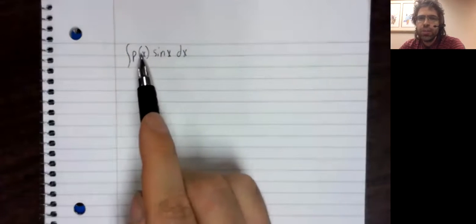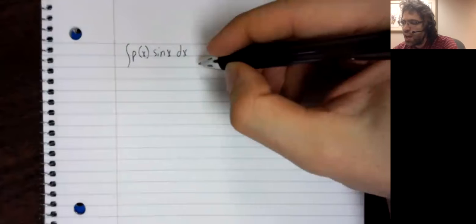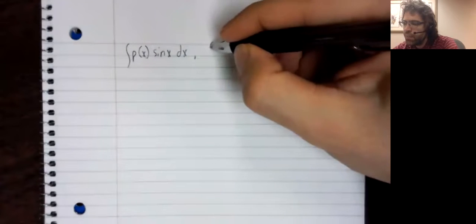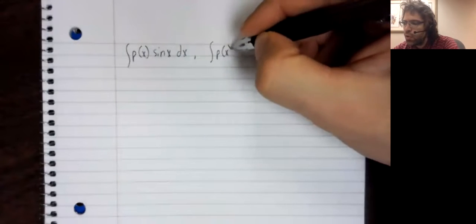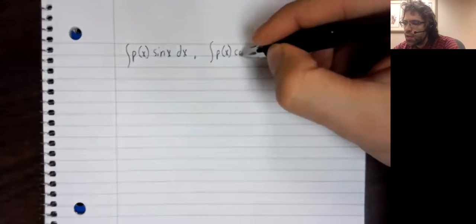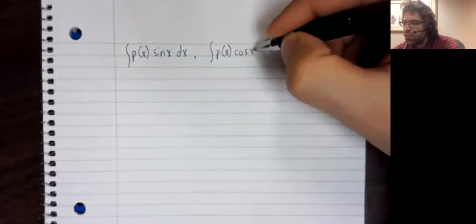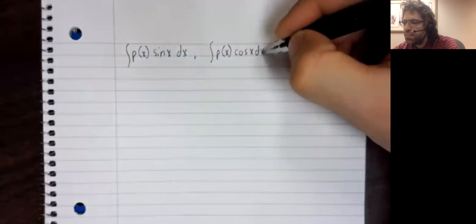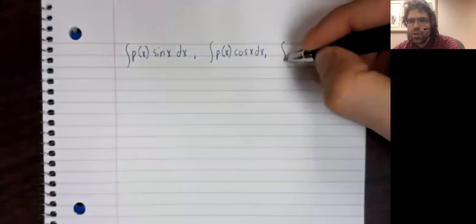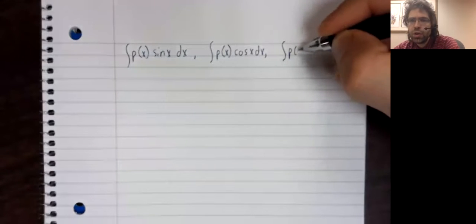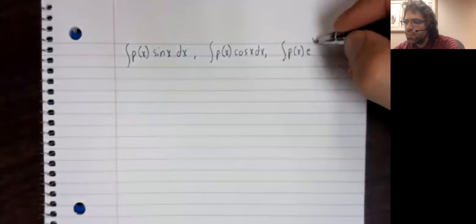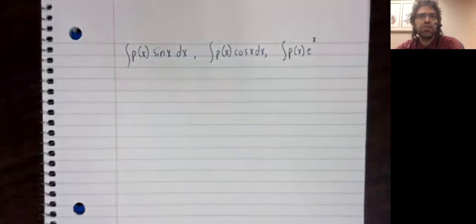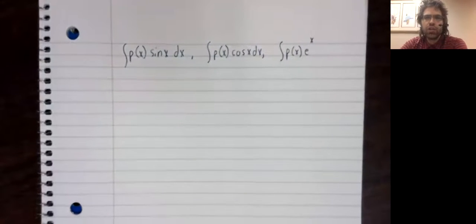When you have a polynomial times a sine, or a polynomial times a cosine, or a polynomial times an exponential function.